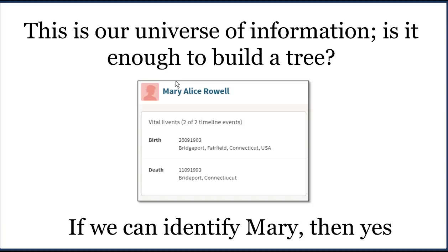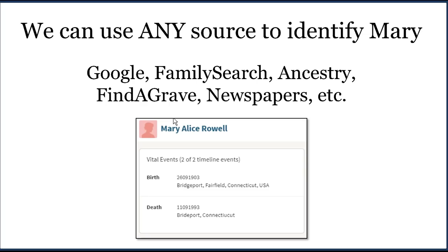The first thing we have to do is identify Mary Alice Rowell and find her biological family so we can start to build out the tree. We could use any source at all to do this — Google, newspapers, Find a Grave, FamilySearch, Ancestry. Those are all excellent methods to identify who Mary Alice Rowell was. Particularly in this time frame, we might very well find an obituary for Mary Alice Rowell or an obituary of another relative that mentions her.